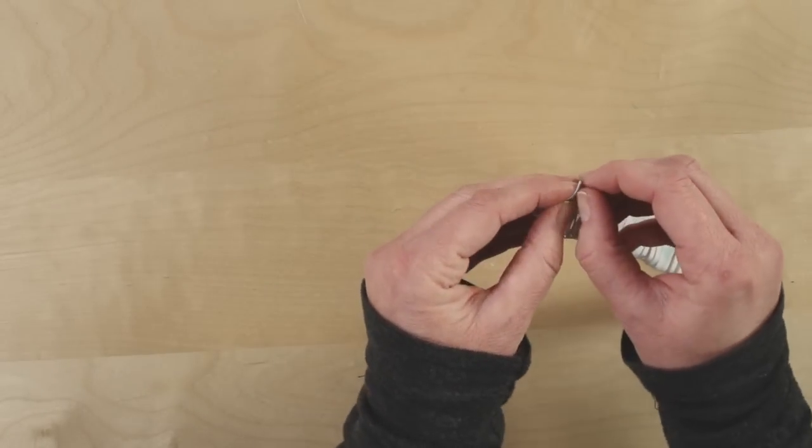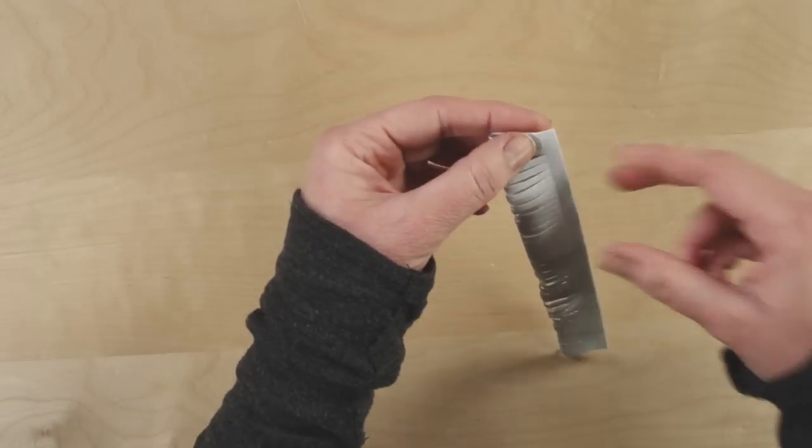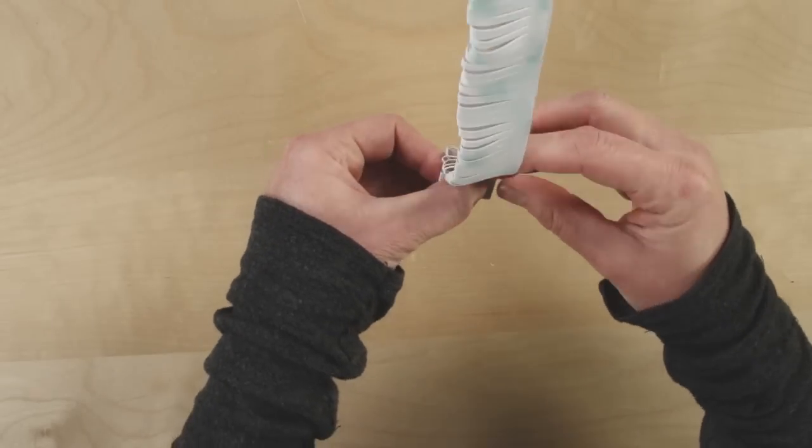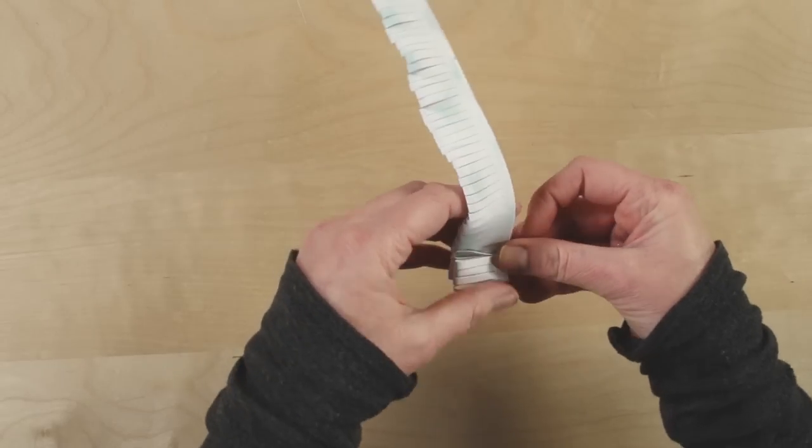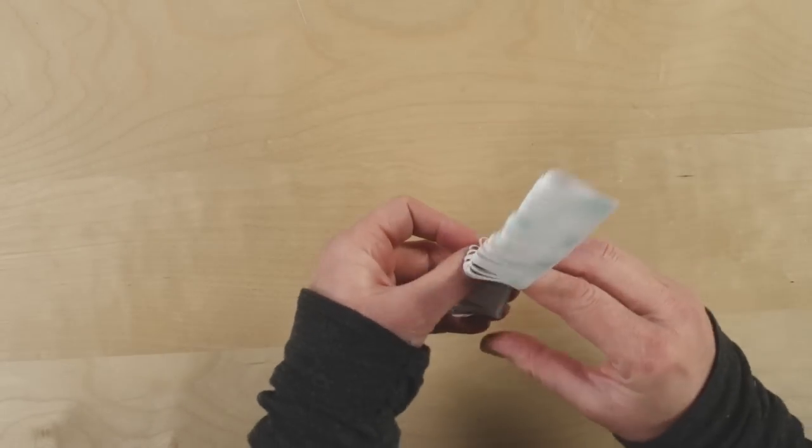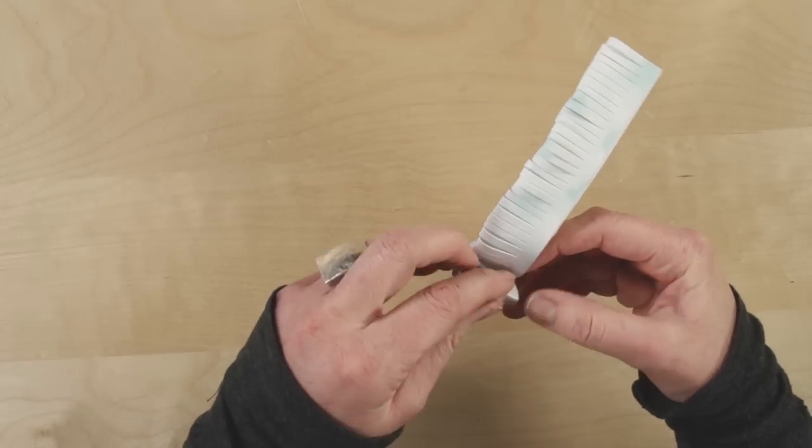Then they're sticky on the other side so you peel that off as well and then just wrap it around into a circle. Stick it to itself and just keep going all the way to the end.